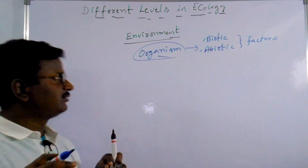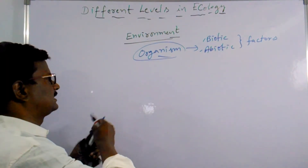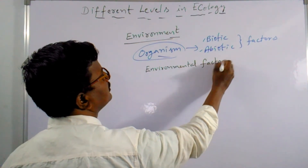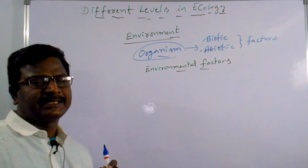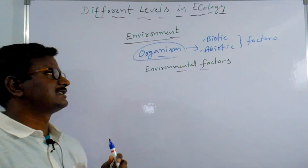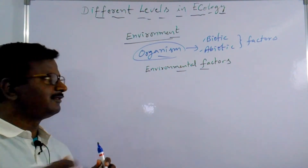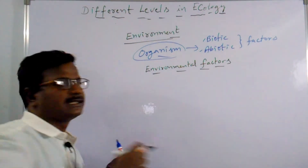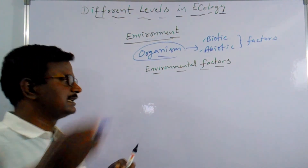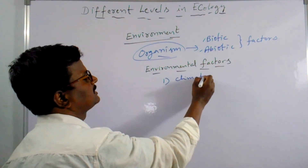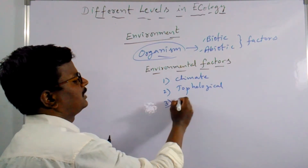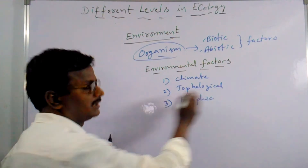Any component that influences the organism is called an environmental factor. Environmental factors are three types: climatic factors, topological factors, and edaphic factors.